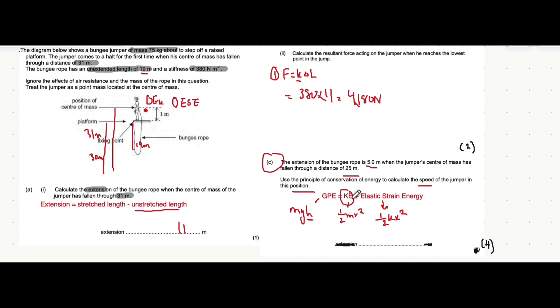Now what we do to find the speed of the jumper in this position is we use the fact that the kinetic energy is the gravitational potential energy take away the elastic strain energy.